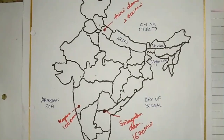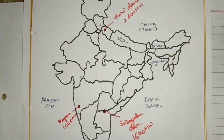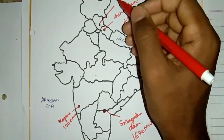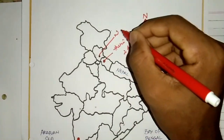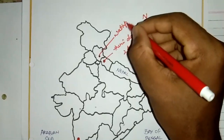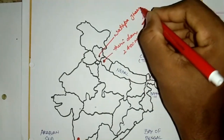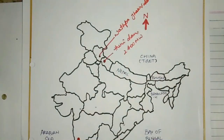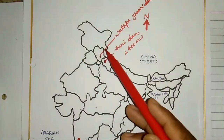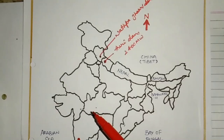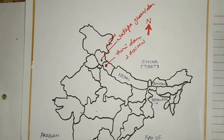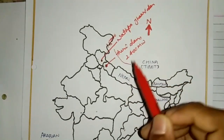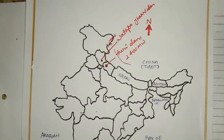The fourth one is the Nathpa Jhakri Dam, located in Himachal Pradesh. It is situated on the Sutlej River and produces 1,500 MW of electricity. The river flows from the Himalayas and is channeled through the dam.